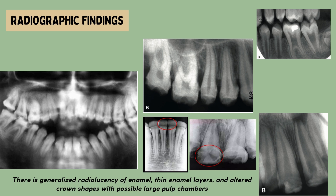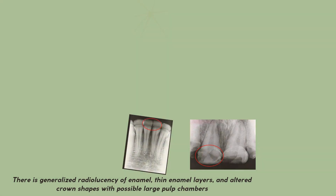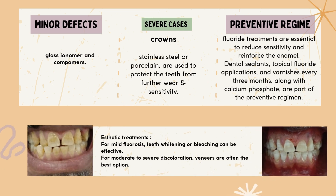Management and treatment of enamel hypoplasia are crucial because it is more prone to early childhood caries. For restorative treatments: amalgam is not used. For minor defects, glass ionomer and compomers, which are polyacid-modified composite resins, are recommended. For more severe cases, crowns such as stainless steel or porcelain are used to protect teeth from further wear. Additionally, fluoride treatments are essential to reduce sensitivity and reinforce the enamel. Dental sealants, topical fluoride applications, and varnishes every three months, along with calcium phosphate, are part of the preventive regimen.